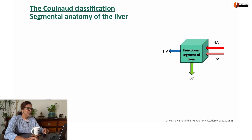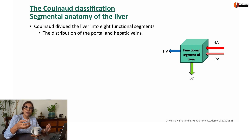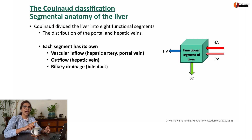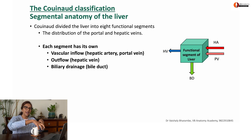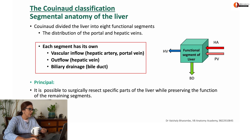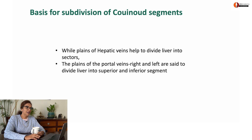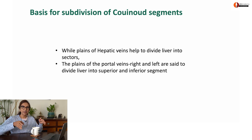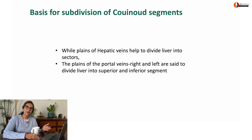Each of these sectors was divided into segments. What did Couinaud do? Couinaud divided the liver into eight functional segments based on distribution of portal veins and hepatic veins, such that each segment has its own vascular inflow through hepatic artery and portal vein, vascular outflow through hepatic veins, and bile drainage through bile duct. The principle is that it is possible to segmentally resect a part of the liver, preserving the function of other segments. The basis for subdivision is like a grid: vertical subdivisions are by hepatic veins, and the horizontal subdivision is by the portal vein.